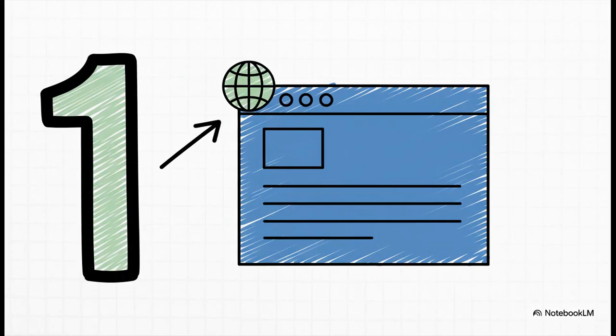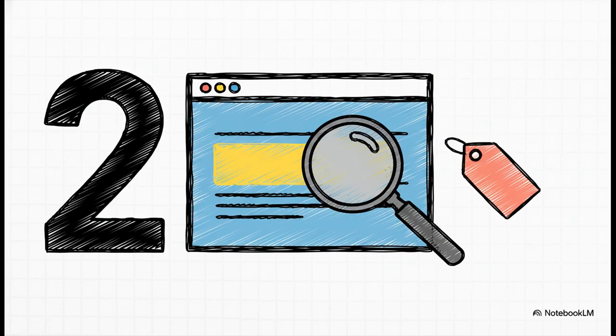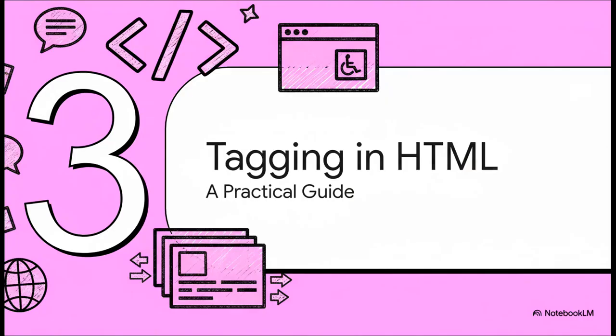Rule number one is the big one: you have to declare the main language for the entire web page. Is your site mostly in English, German, Japanese? You've got to set that as the default right at the top so browsers and screen readers know what to expect from the get-go. Rule number two just builds right on top of that — if you switch languages, even for one word or a short quote, you need to flag that specific part. So you set your main language for the whole page and then put a little label on any exceptions. Simple as that.